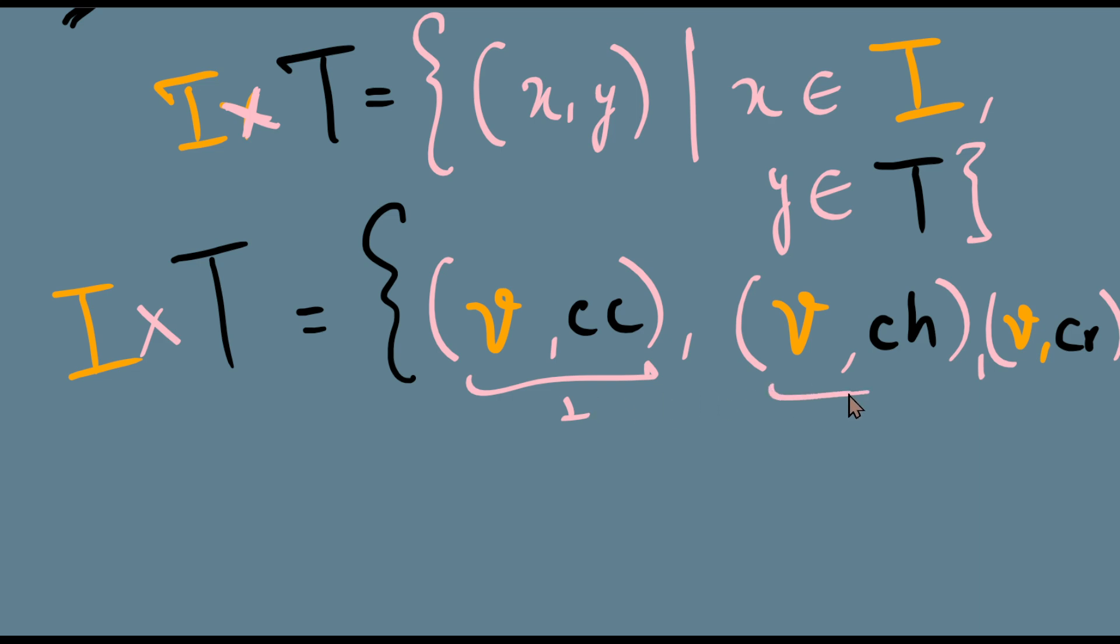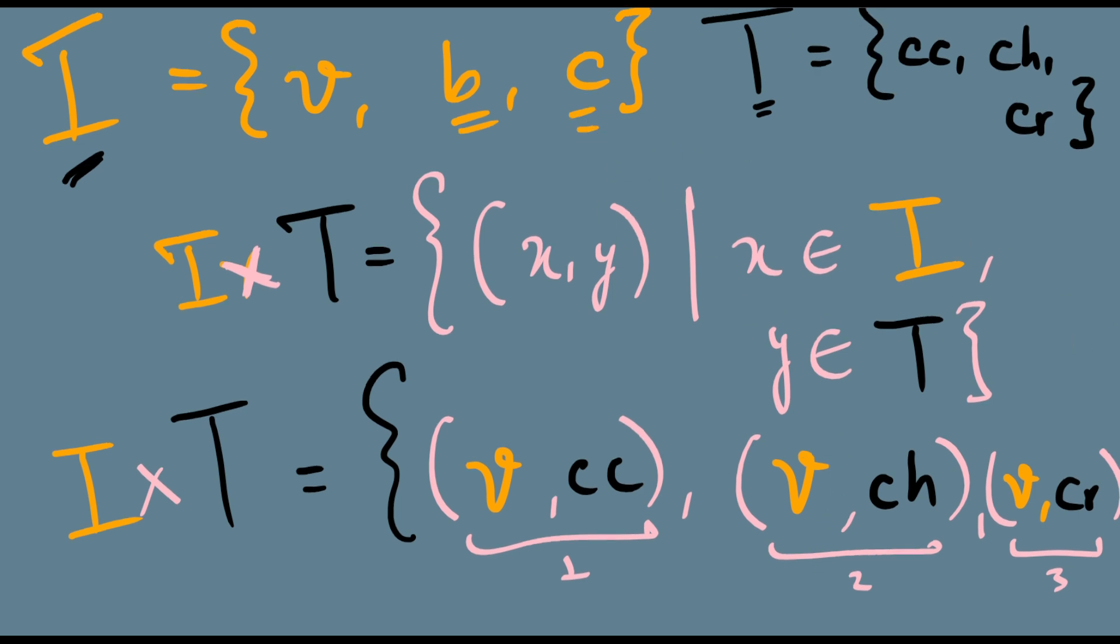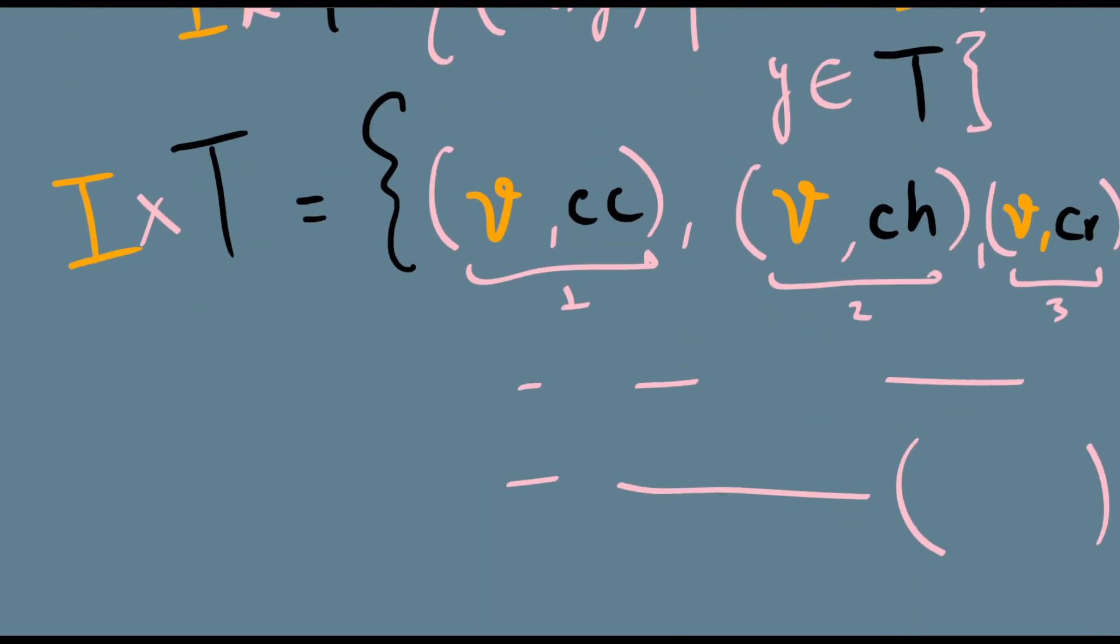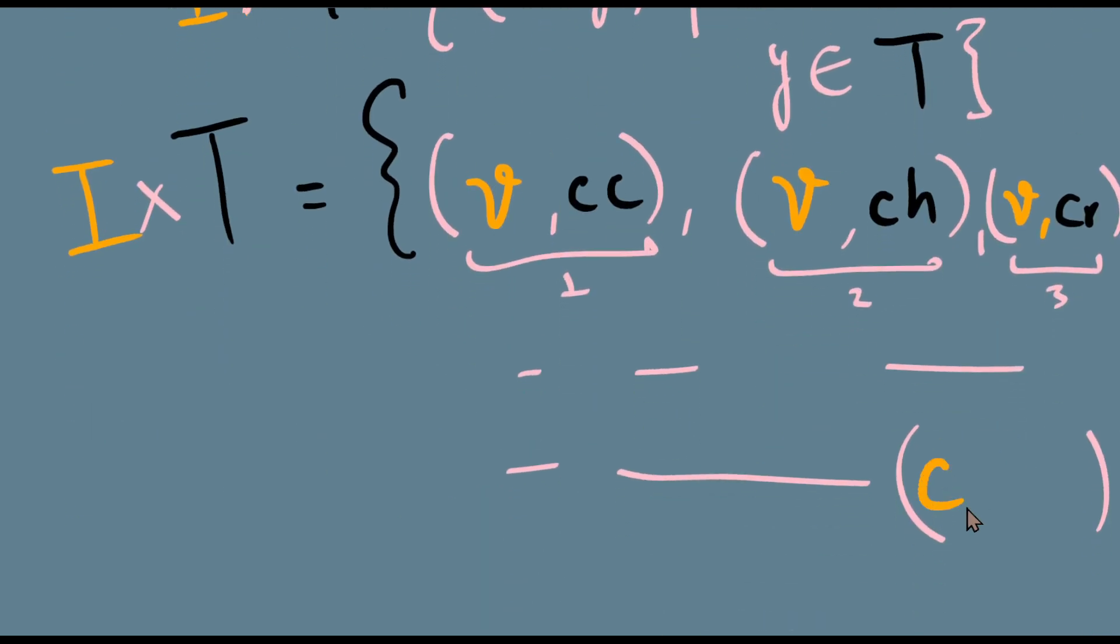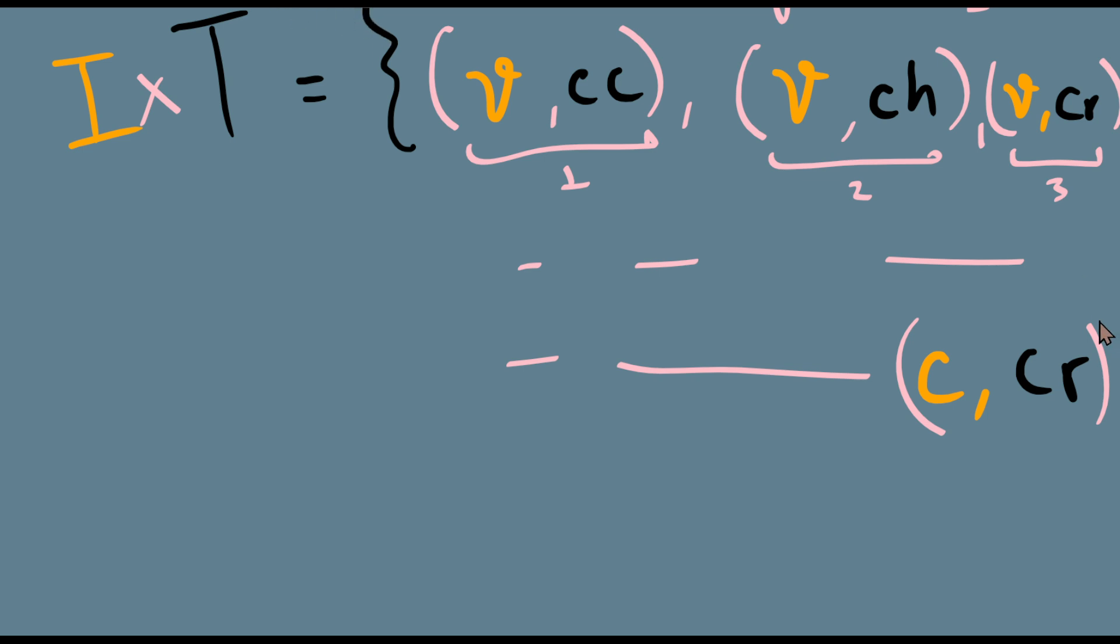So this is the first element, the second element, the third element. We'll have three more elements with B as the first element of the pair, and three more elements with C as the first element. C means chocolate. So the last element, the way I am ordering this, would be C comma CR. Yes, this is chocolate ice cream with caramel topping. So this is my I cross T set.